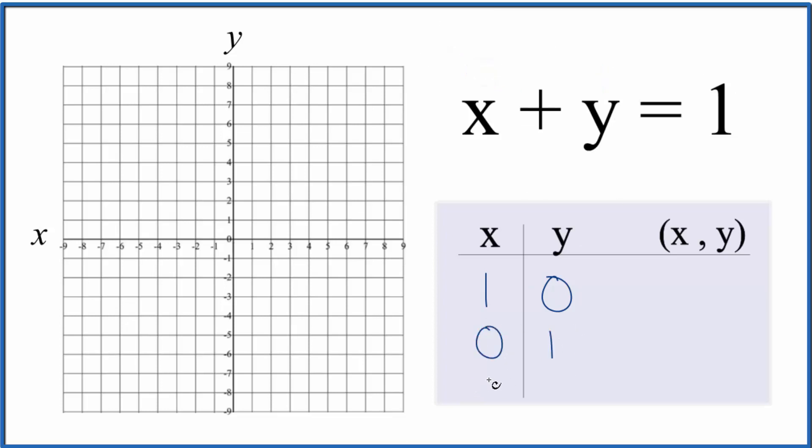And then let's say if we had negative 1 for x, we had negative 1, y is going to have to be 2. So these are the points that we'll plot for this linear equation x plus y equals 1.